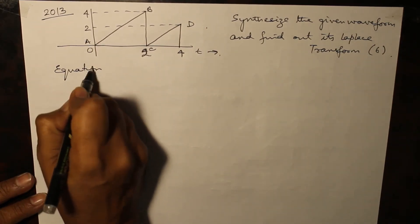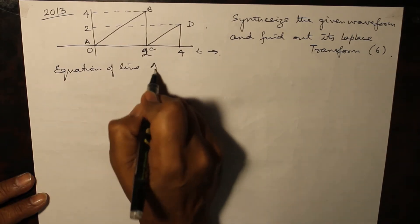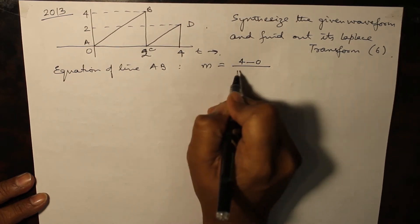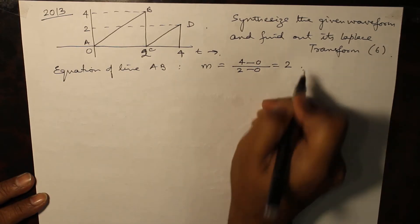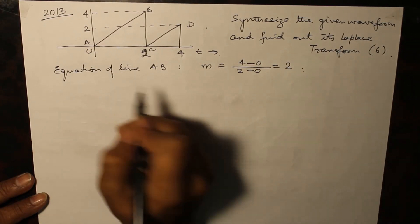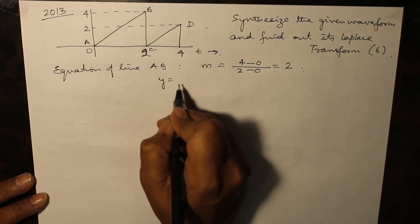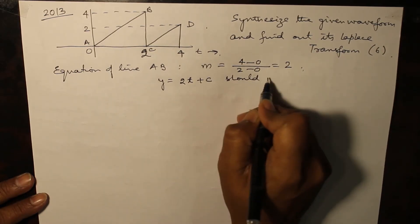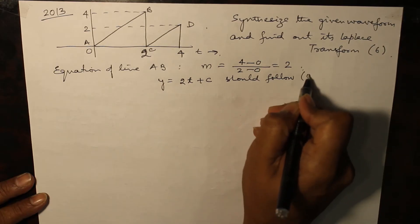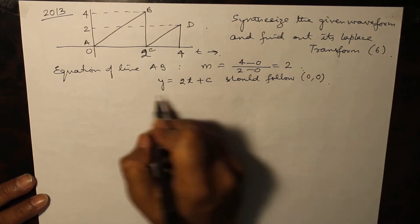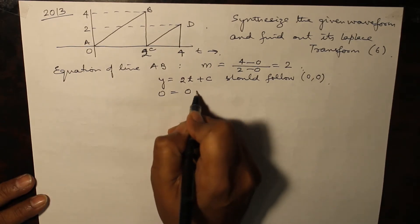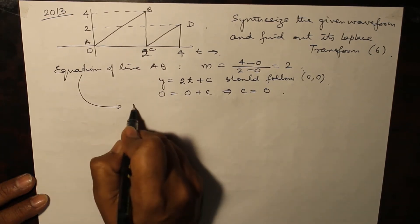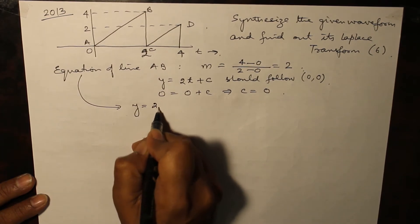For the equation of line AB, the slope is (4 minus 0) divided by (2 minus 0), which is 2. It passes through point (0, 0), so y equals mx plus c becomes 2t plus c. Substituting (0, 0) gives c equal to 0, so the equation of line AB is simply y equal to 2t.